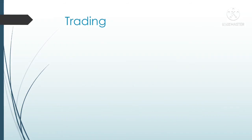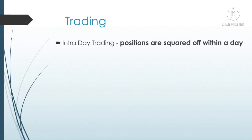Now let's see what is trading. Trading is nothing but buying and selling the stocks within short term. There are several types of trading. First, intraday trading. In intraday trading, positions are squared off within a particular day. That means if you take a trade in the morning, you must close the trade in the evening. As buying and selling takes place in the same day, it is called intraday trading.